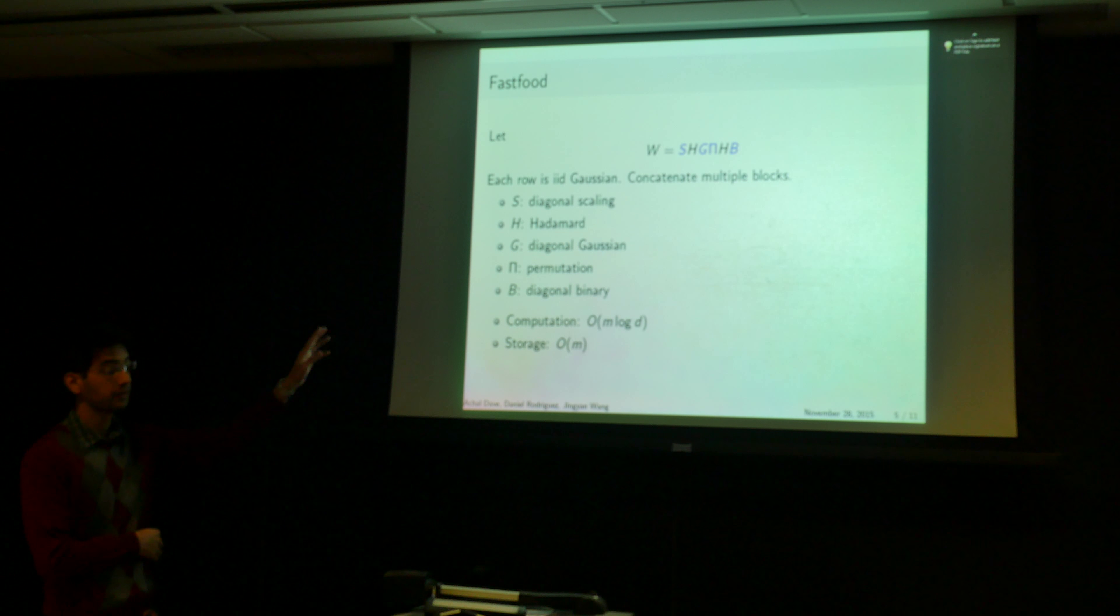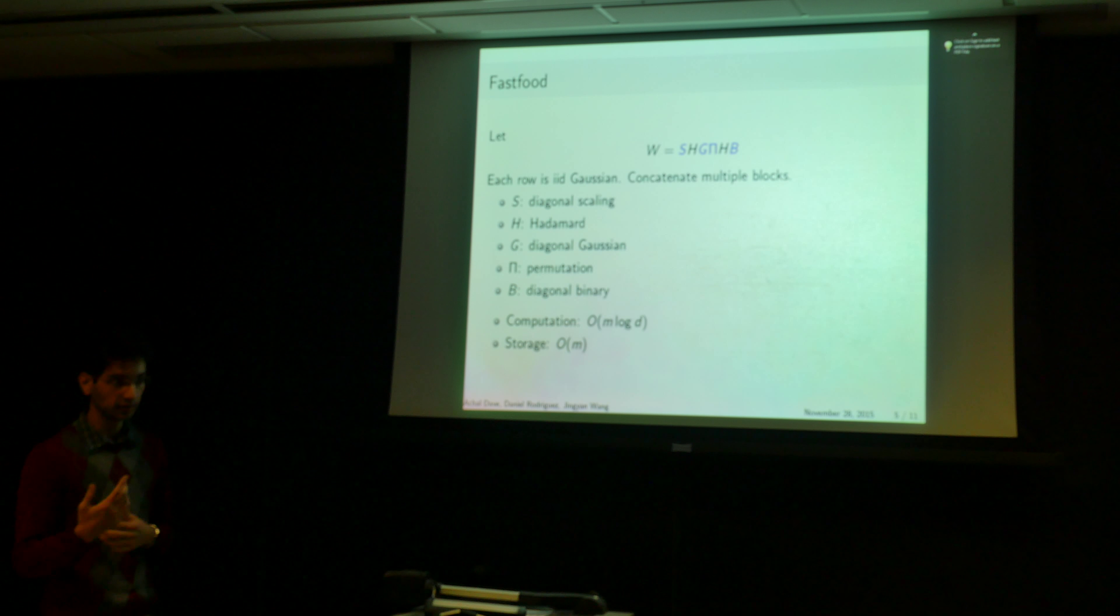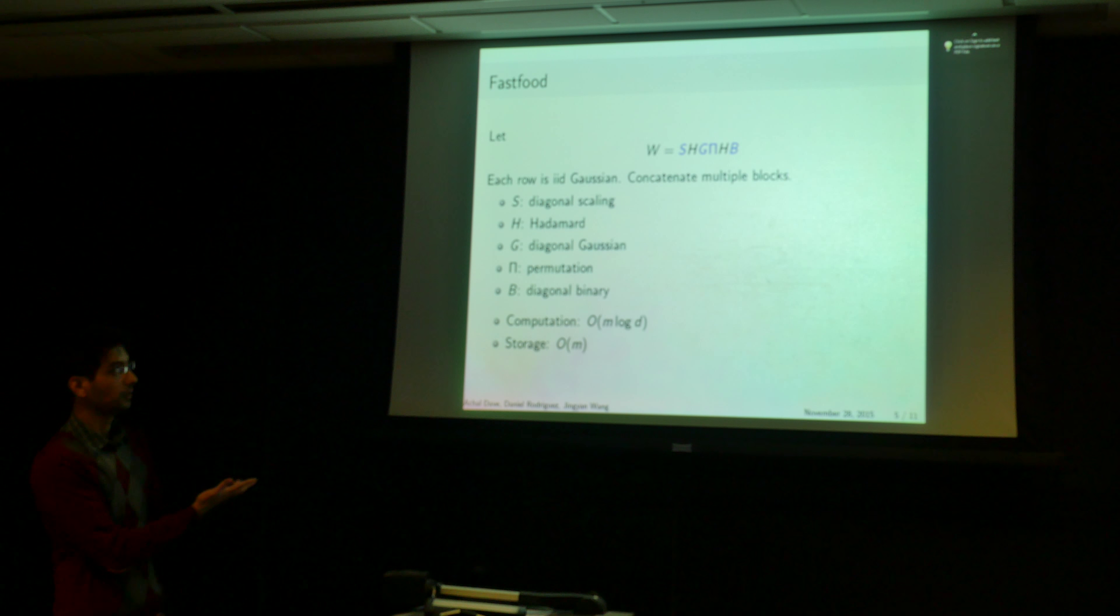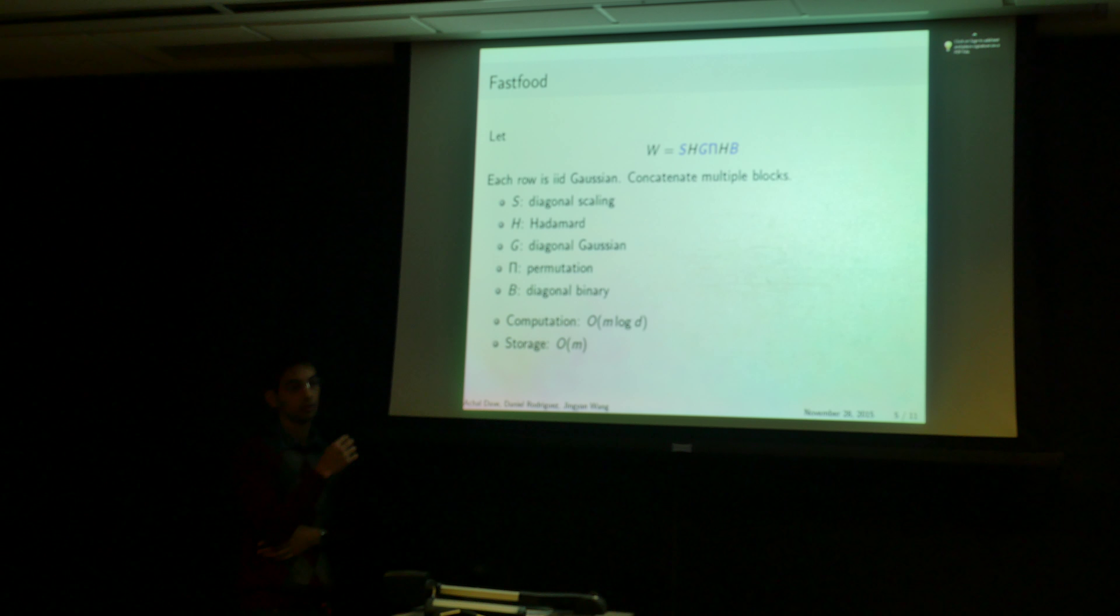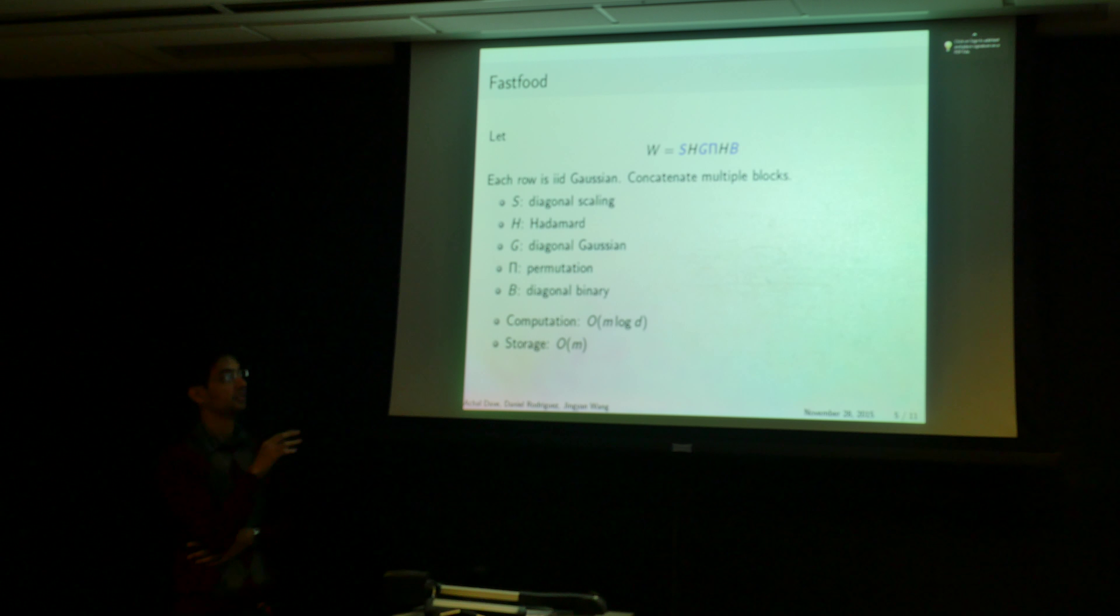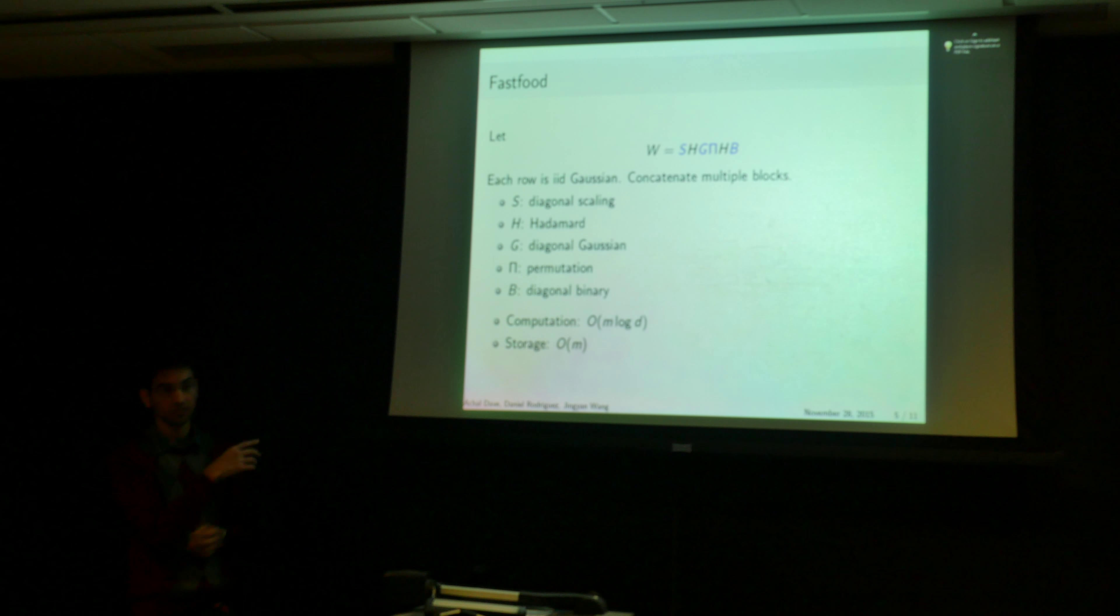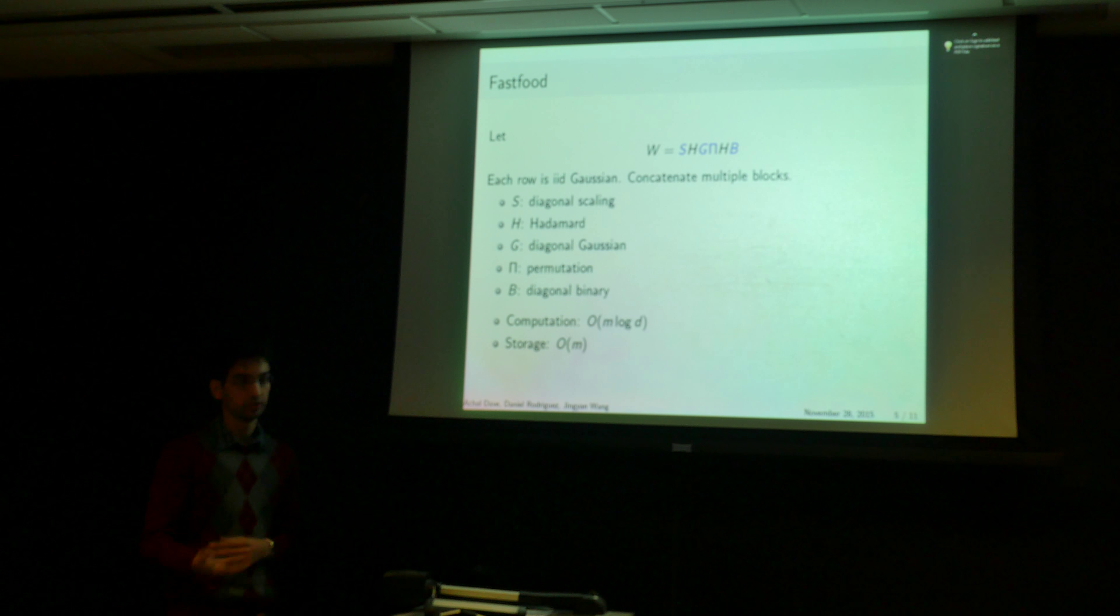So this is very fast to compute. The product of the Hadamard matrices can be computed using the Hadamard transform very quickly. And a lot of these matrices are diagonal, so that also makes the product itself fast. So this speeds up the computation. And you don't need to store the Hadamard matrices, and you only need to store the diagonal Gaussian matrices and the scaling matrices. So your storage also goes down.